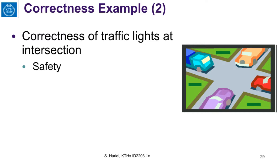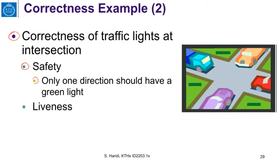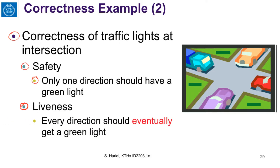Here is another example about the correctness of a traffic light at an intersection. The safety property states that only one direction should have a green light — otherwise it would be disastrous if two directions had the same green light; that would be the bad event. The liveness property states that progress will happen: every direction should eventually get a green light.